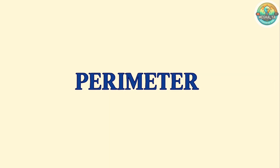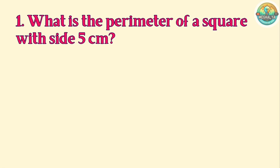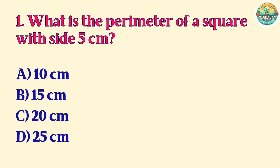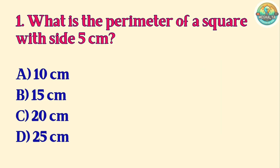Perimeter Question 1. What is the perimeter of a square with side 5 cm? A. 10 cm. B. 15 cm. C. 20 cm. D. 25 cm. Correct answer is C. 20 cm.